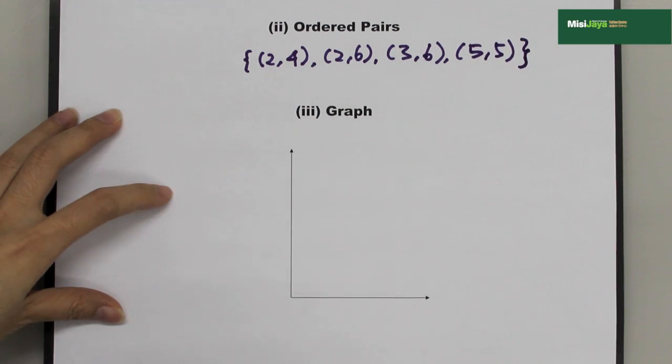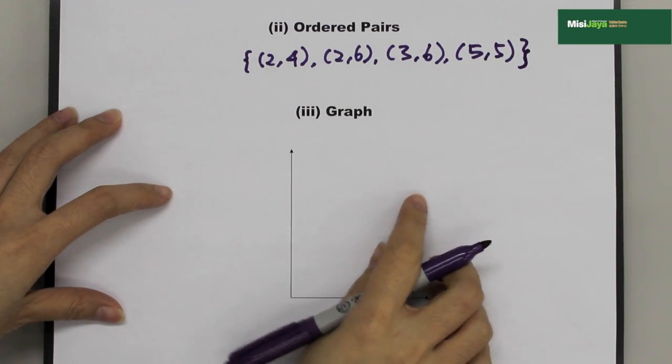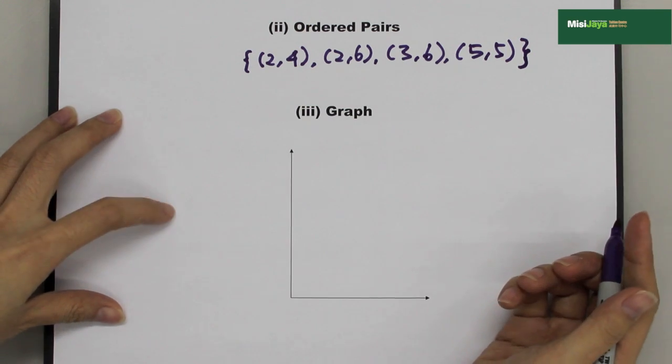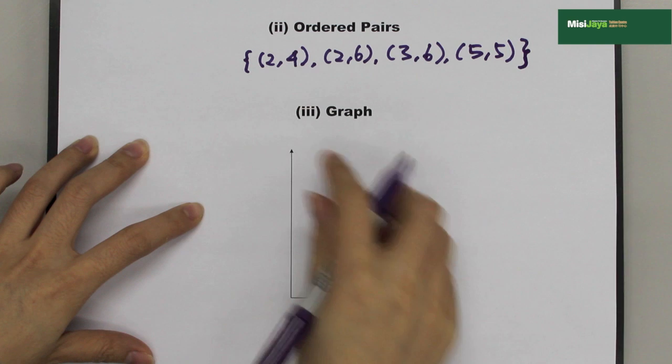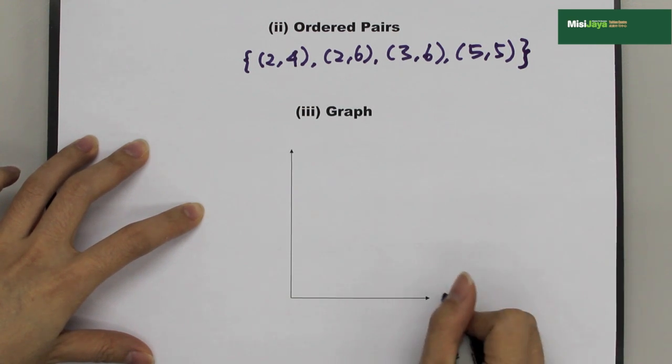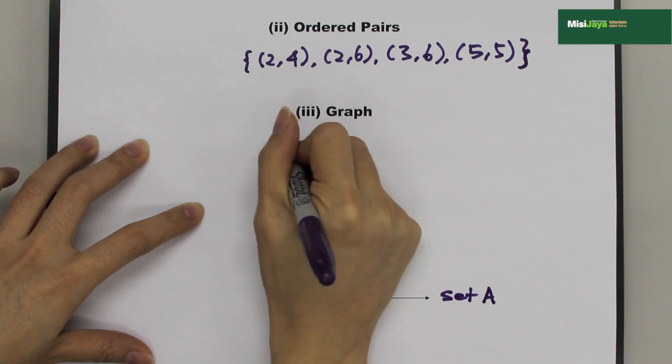Then we draw another curly bracket. The third way is by using the graph method. On the X axis, we label as set A. On the Y axis, we label as set B.